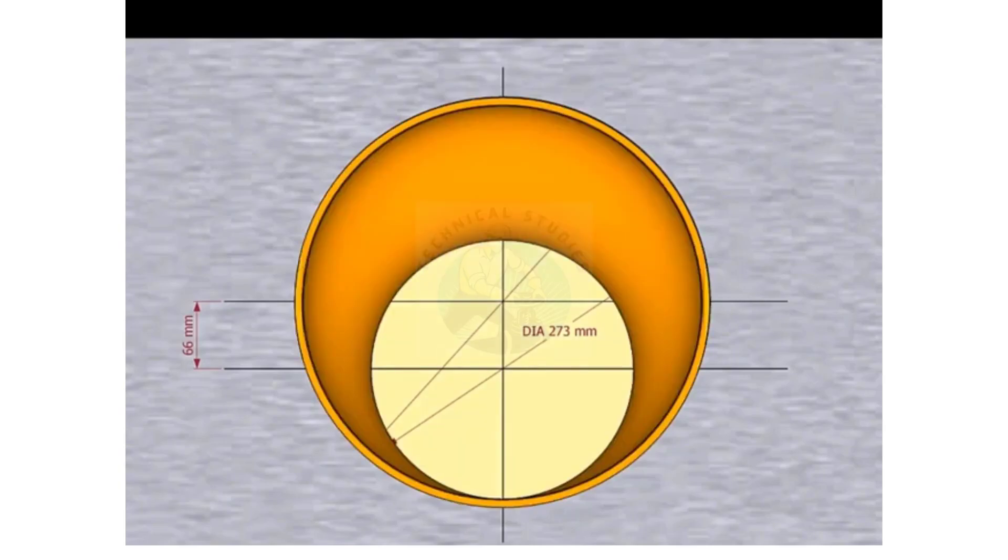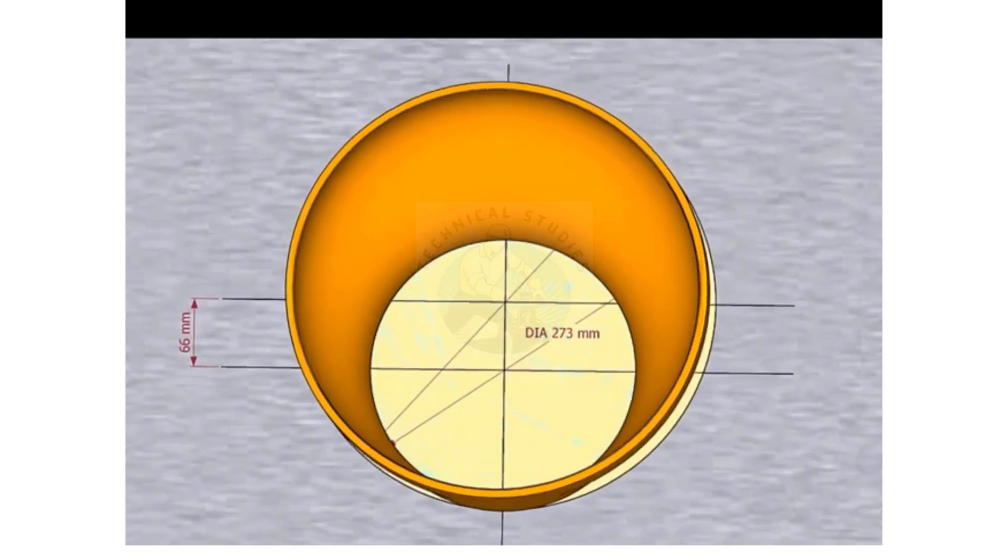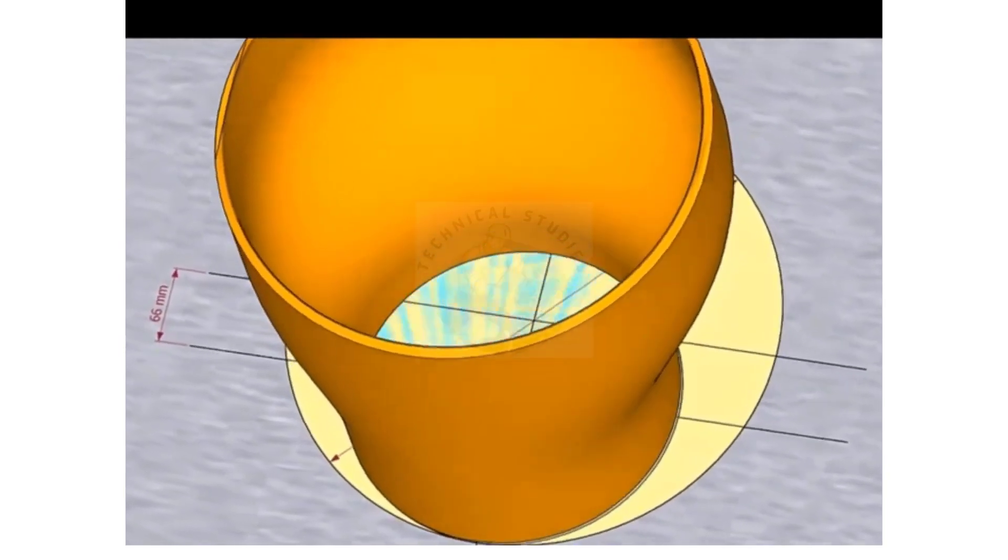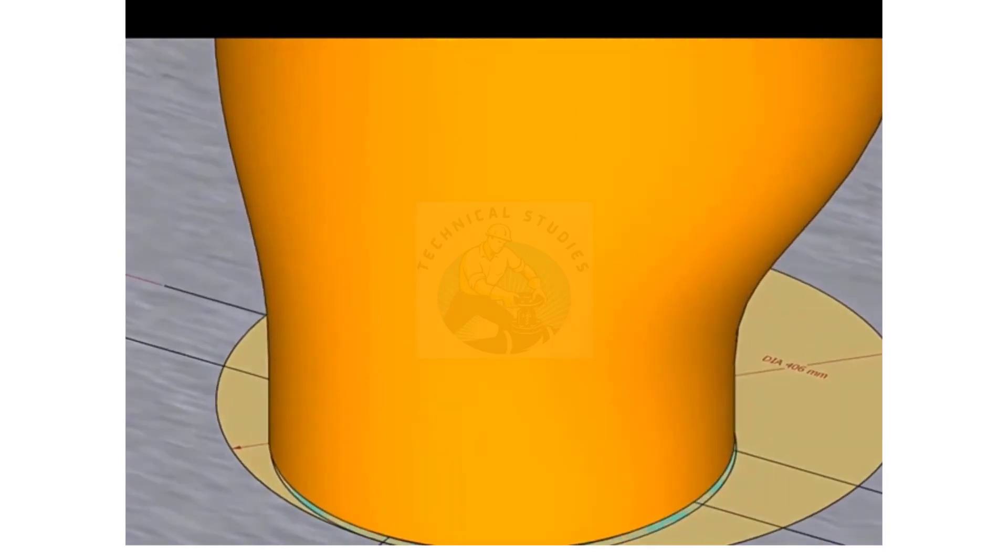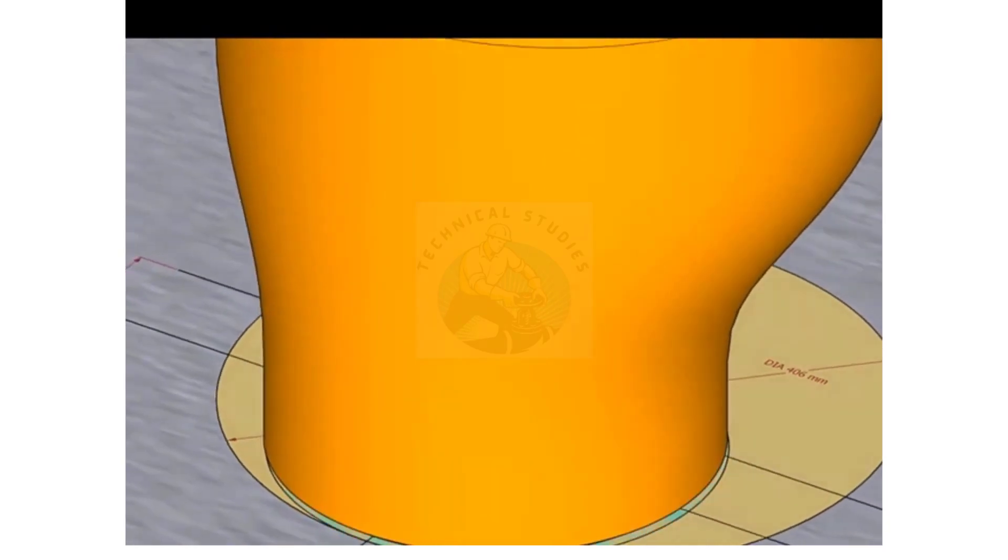Place the reducer on the layout facing the small end down. Inspect carefully if the reducer sits on the circle correctly.